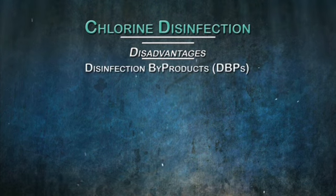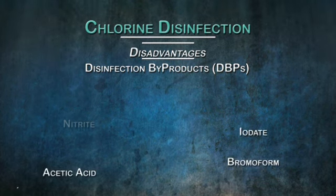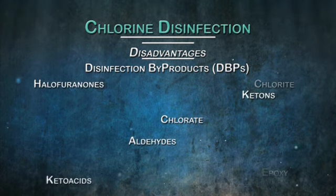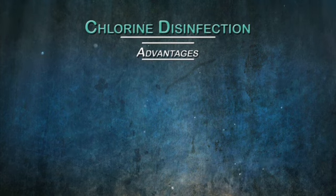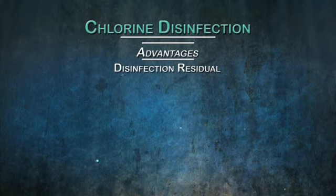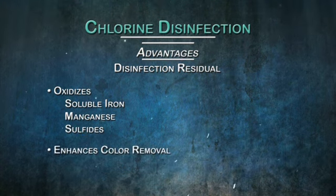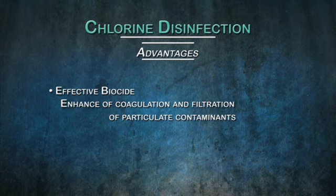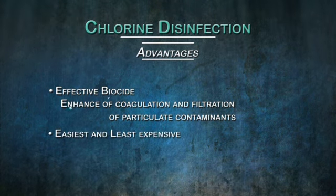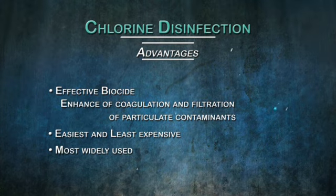One disadvantage of disinfection by free chlorine, especially with surface water systems, is the potential for the formation of disinfection byproducts, or DBPs. For example, halogenated organics are formed when natural organic matter, NOM, reacts with free chlorine. Total trihalomethanes and haloacetic acids are common disinfection byproducts. However, the use of chlorine has numerous advantages in addition to producing a disinfectant residual, such as it oxidizes soluble iron, manganese, and sulfides, enhances color removal, and can reduce overall taste and color. Other advantages include the enhancement of coagulation and filtration of particulate contaminants, as it acts as an effective biocide, and is the easiest and least expensive disinfection method, regardless of system size. It is the most widely used disinfection method, and therefore, the best known.